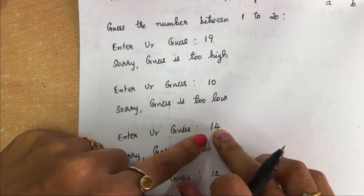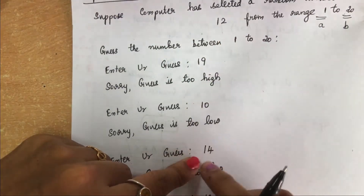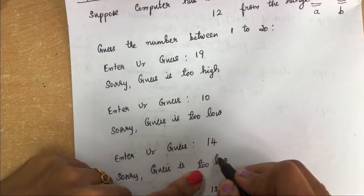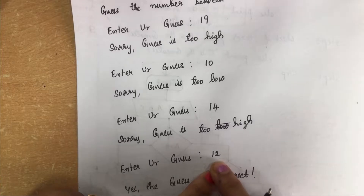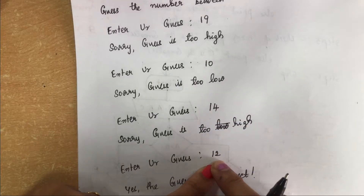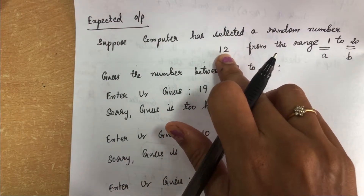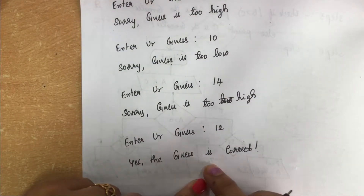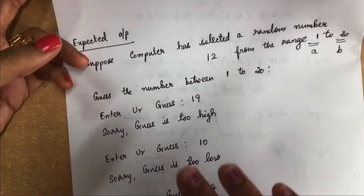We ask for another guess. The user enters 14. Comparing 12 and 14, it is too high, so we display 'Sorry, the guess is too high.' Now the number must be between 10 and 14. The user guesses 12, which exactly matches the computer-generated number. The computer displays 'Yes, this is correct!' This is the expected output.